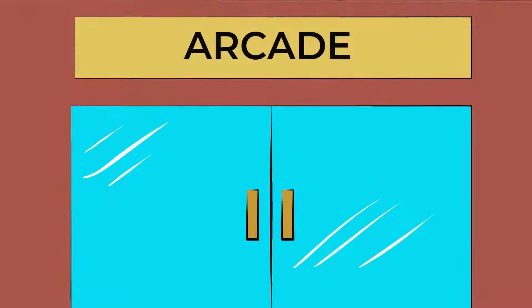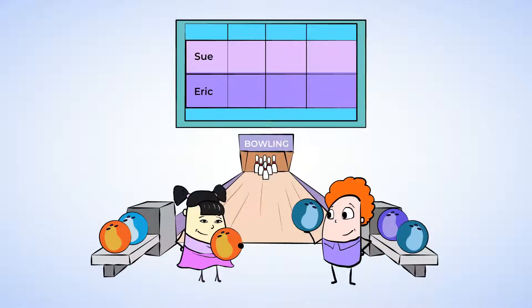But today, we're going to take a trip to the arcade and check out some game scores. Take a look. Sue and Eric are bowling. Sue scored 187, and Eric scored 235. If the person with the highest score is the winner, who won?